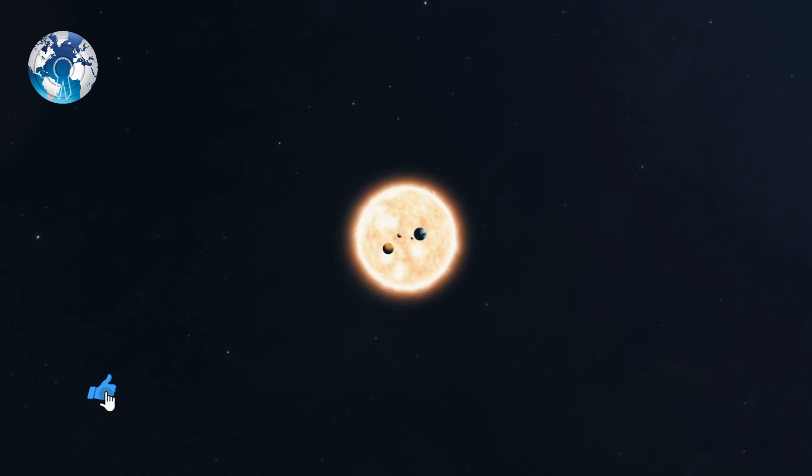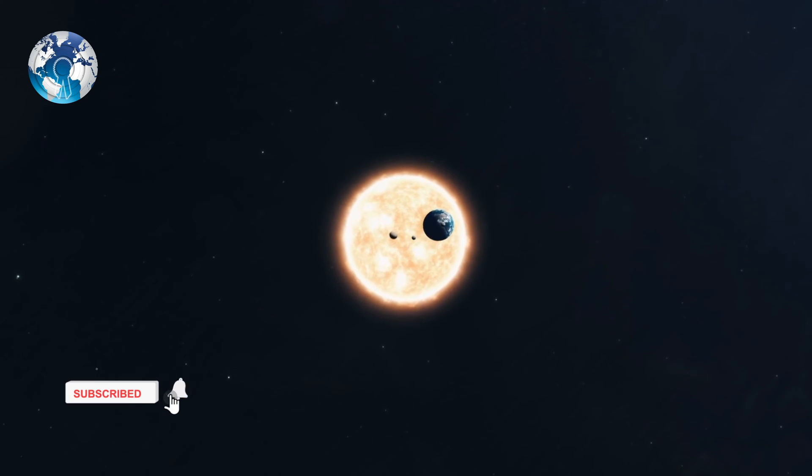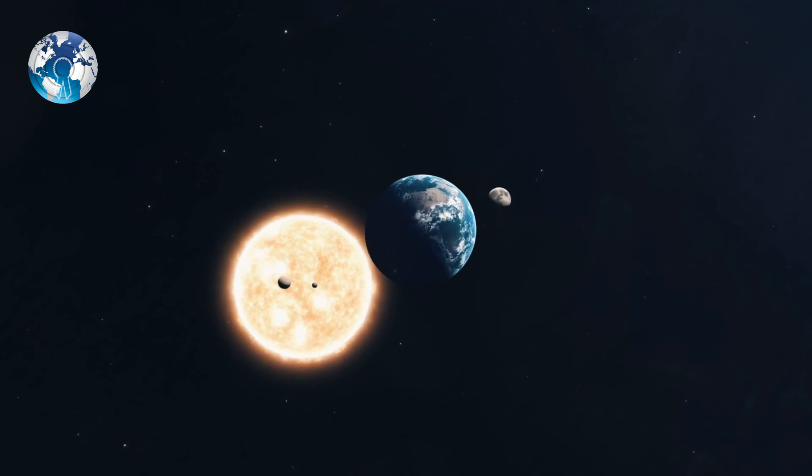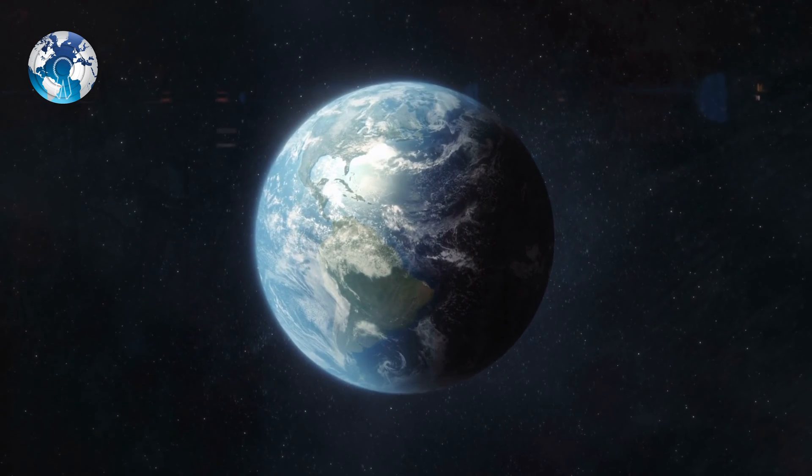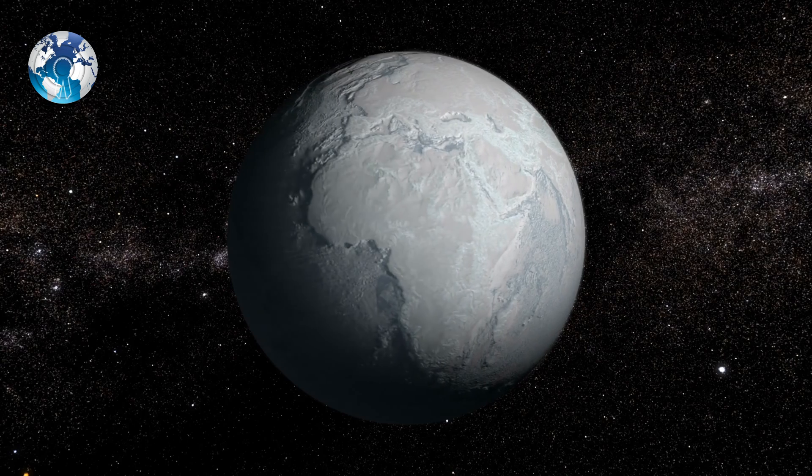The results could give us a new perspective on the evolution of Earth's dynamics. ETH Zurich professor Motohiko Murakami said in his press release, this suggests that the Earth, like the other rocky planets Mercury and Mars, is cooling and becoming inactive much faster than we expected.